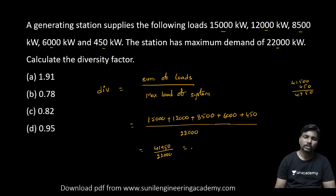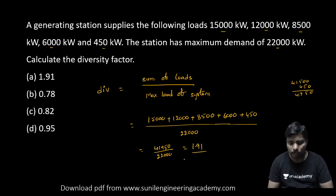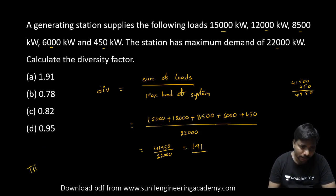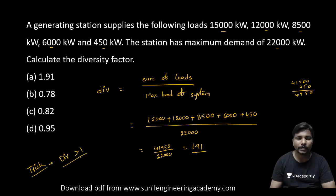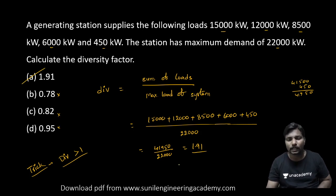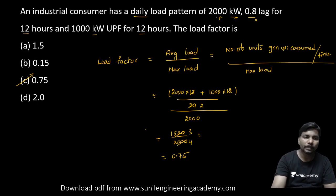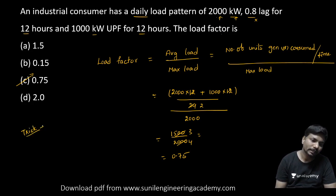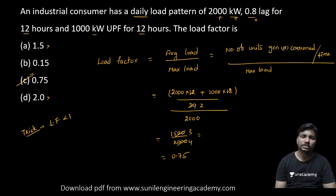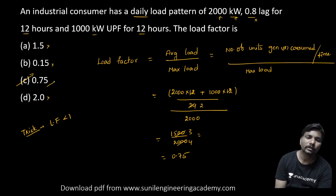A small trick: diversity factor is always greater than one, so we can eliminate options less than one. We can directly identify option A without full calculation. Similarly, for load factor — it is always less than one, so options greater than one can be cancelled. But it is better to calculate and confirm the answer.